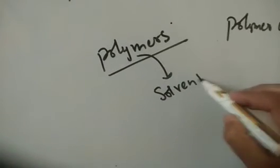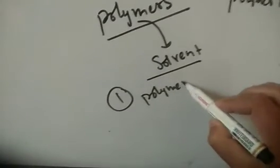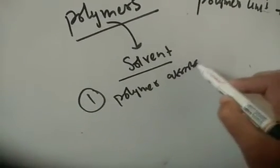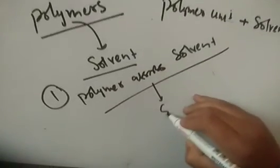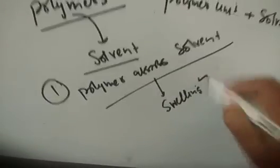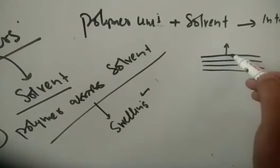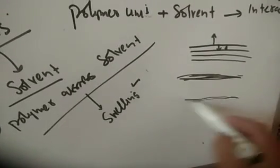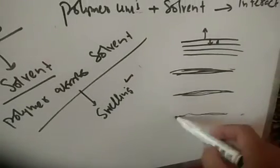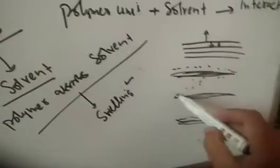In the case of polymers, once we dissolve a polymer in a given solvent, its behavior is strange. The first thing that happens is the polymer absorbs the solvent. When the polymer absorbs the solvent, it swells up. This swelling is step number one. Once they swell up, the polymer chains get far apart.